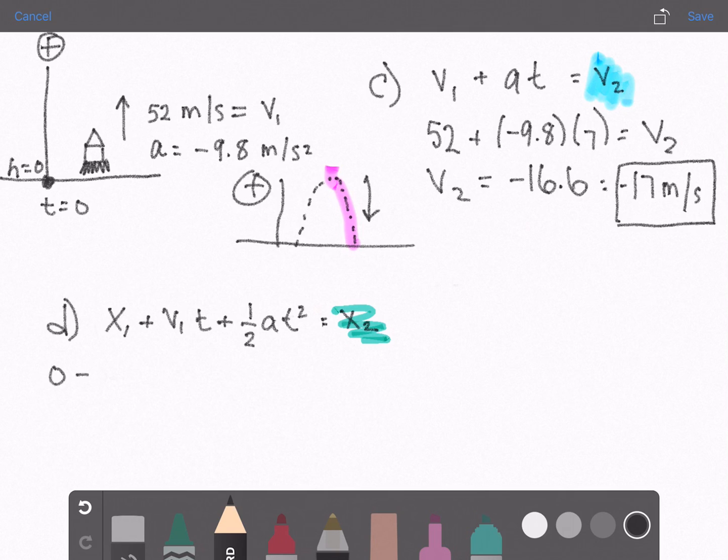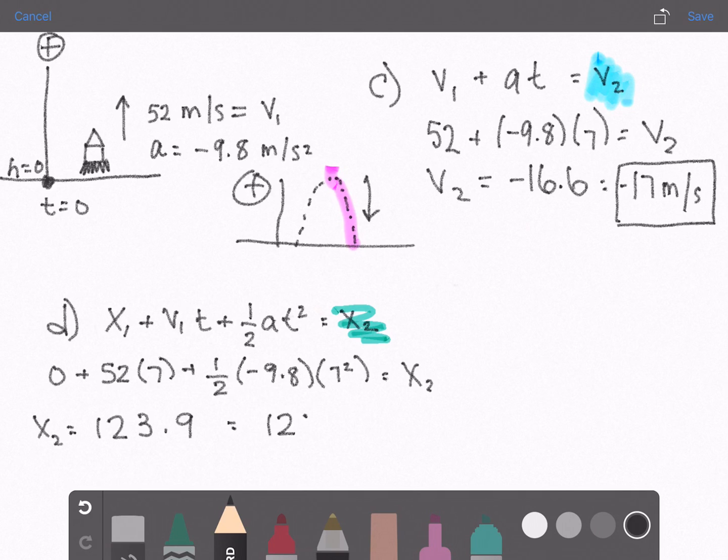x1 is 0, v1 is 52, time is 7 plus 1 half negative 9.8, 7 squared equals x2. Solving for that you'll get 123.9, rounded to two sig figs is 120 and the units is meters because we are finding its altitude.